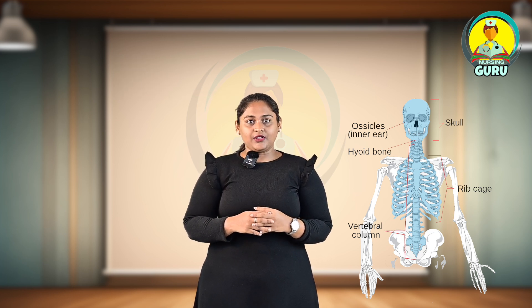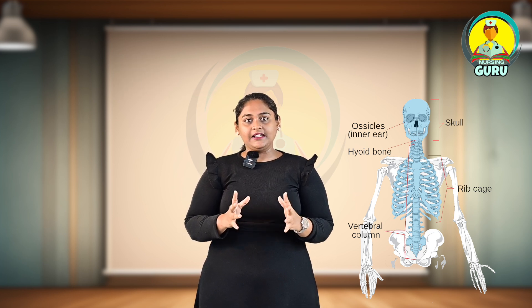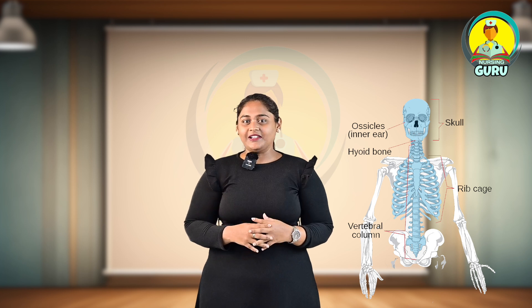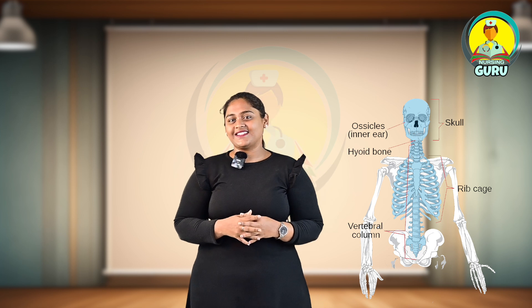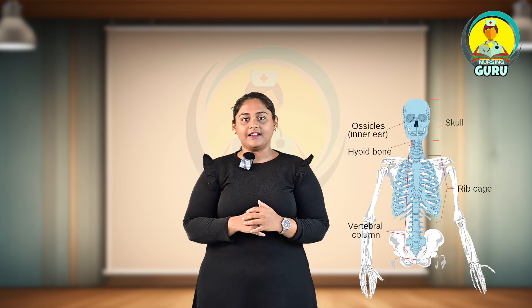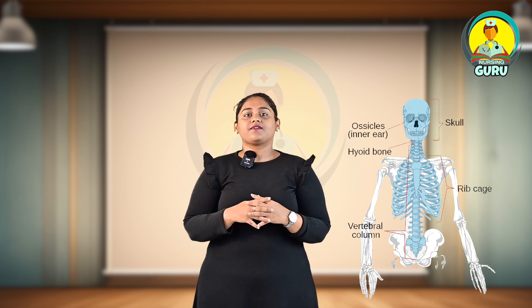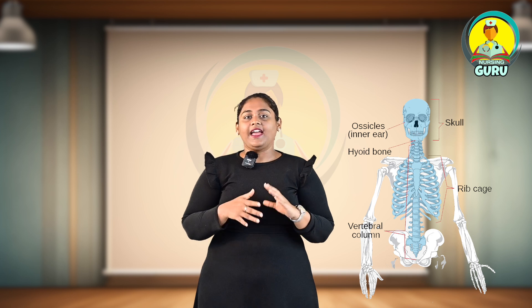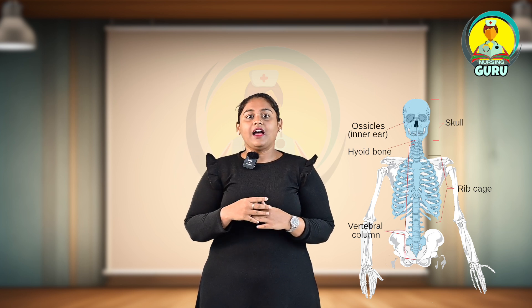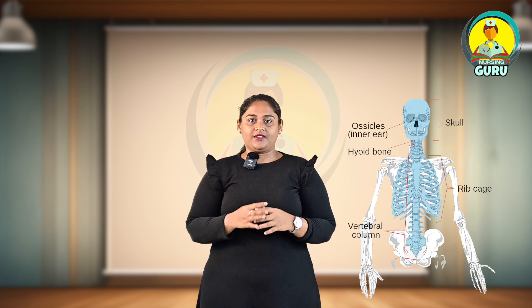The axial skeleton mainly includes the skull, vertebral column, ribs, and sternum. Coming to the movements of the axial skeletal system, there are four main movements: flexion, extension, lateral flexion, and rotation.